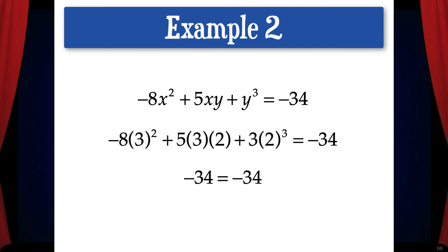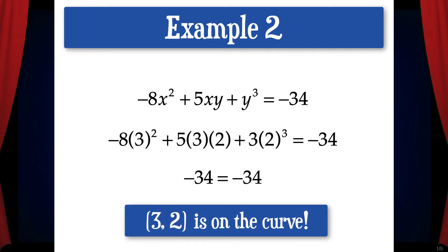So we'll plug in 3 for x and 2 for y. And we see that we get negative 34 equals negative 34. This proves that the point (3,2) is on the curve.